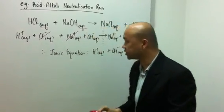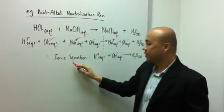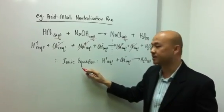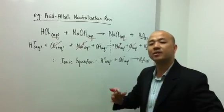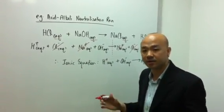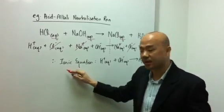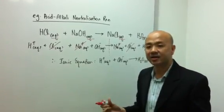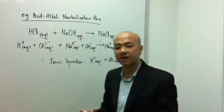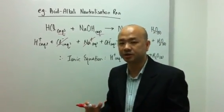But before we end, I just want to share with you something else. Now, sometimes in a certain chemistry syllabus, they will ask you what are the spectator ions in that equation or in that reaction. So what are spectator ions? Spectator ions are formally defined as ions that are not taking place in that reaction.